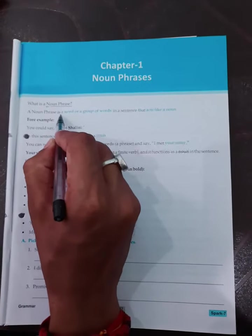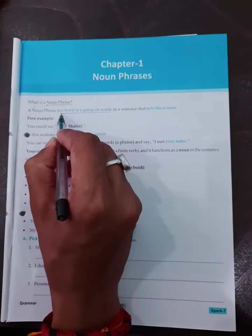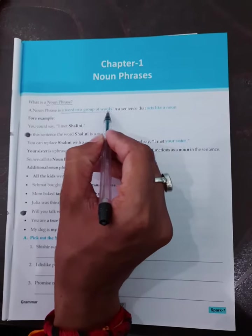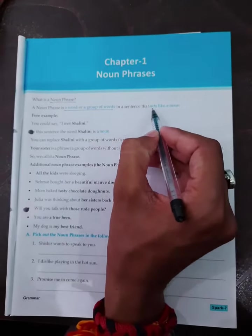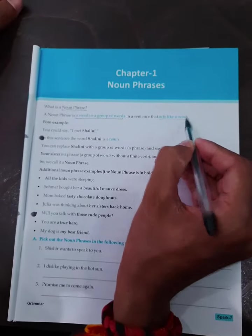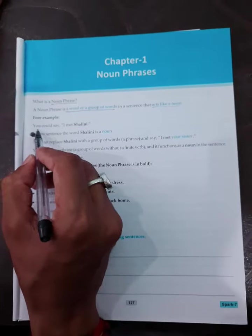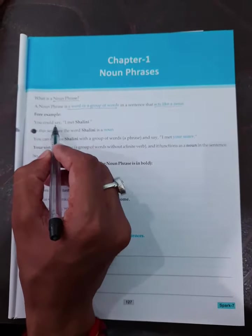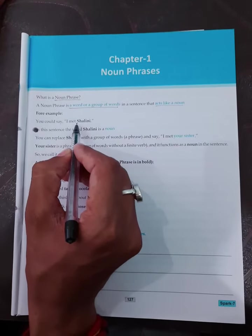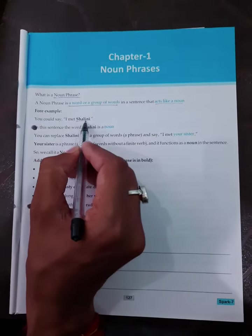Noun is a single word, and noun phrase is a word or a group of words in a sentence that acts like a noun. For example, you could say I met Salini. Salini is a noun.